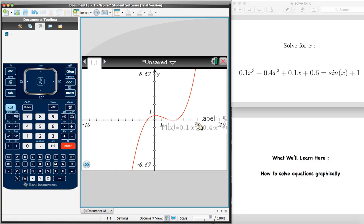And we can now see that red curve here, which corresponds to the curve y = 0.1x³ - 0.4x² + 0.1x + 0.6. That's done. That's the left hand side of our equation dealt with.